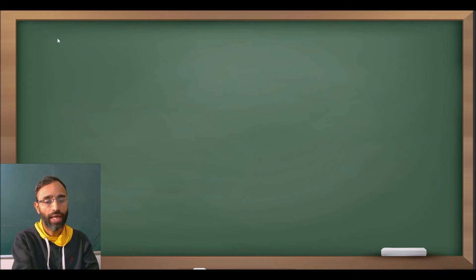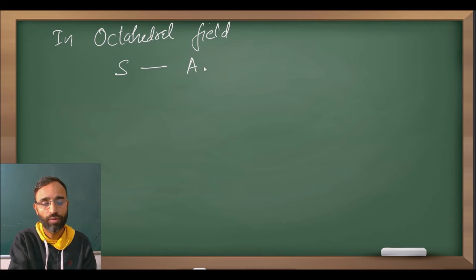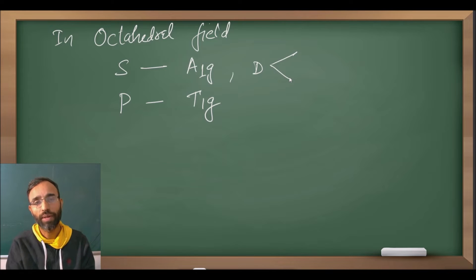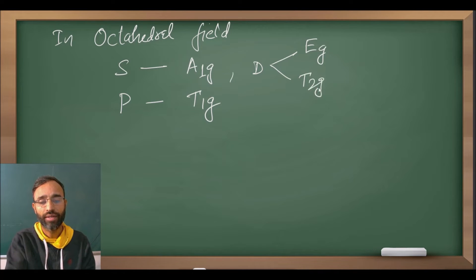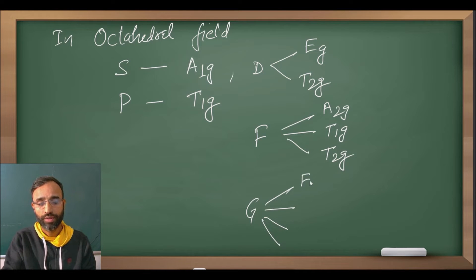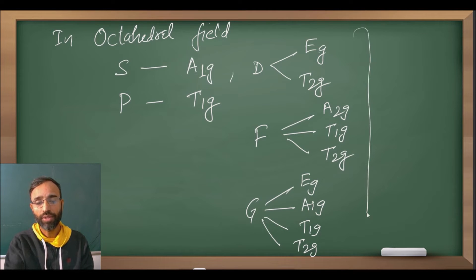In octahedral field, the S state will not split but transforms into A1G. The P state transforms into T1G. The D state splits into EG and T2G. The F state splits into A2G, T1G, and T2G. And the G state also splits, giving additional representations. Counting all resulting states from ⁶S, ⁴G, ⁴P, ⁴D, and ⁴F gives a total of 11 states.